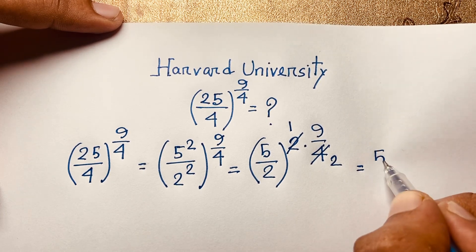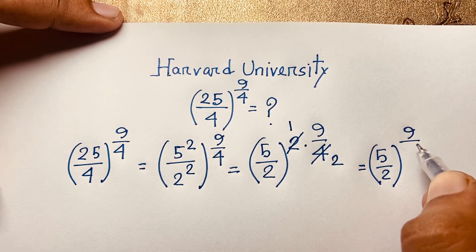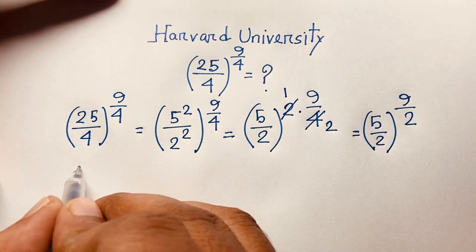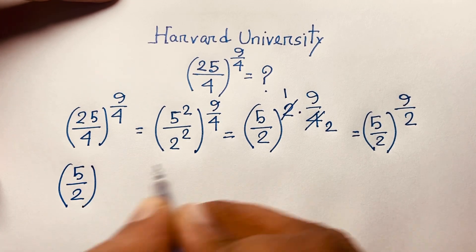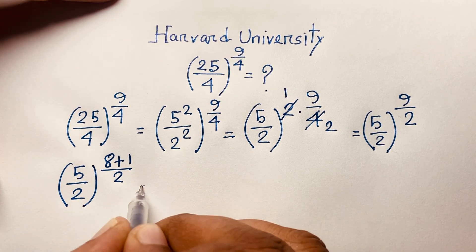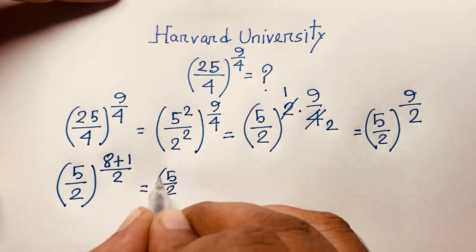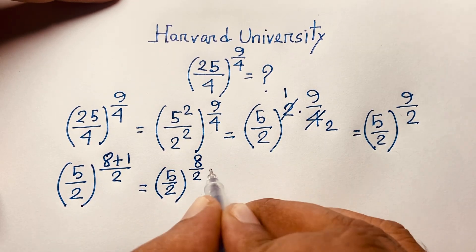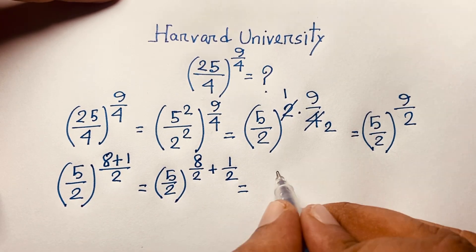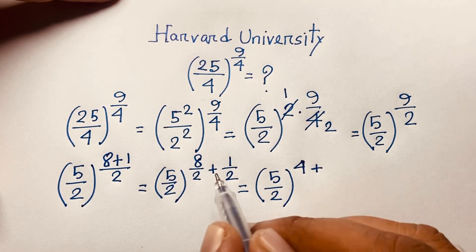Now this expression is (5/2) to the power 9/2. I rewrite the exponent 9/2 as 8+1 over 2, which separates into 8/2 plus 1/2. Since 8/2 = 4, this becomes (5/2) to the power 4 plus one-half.